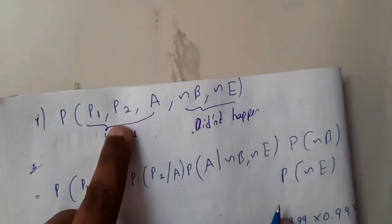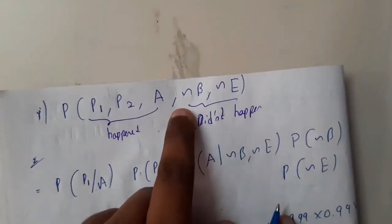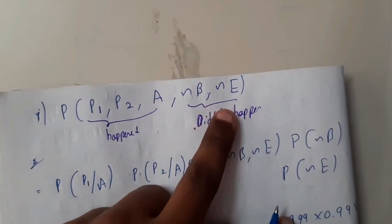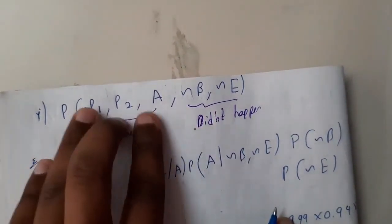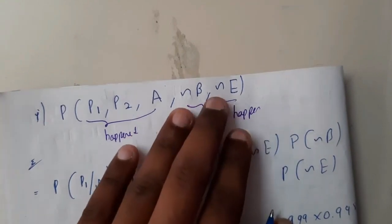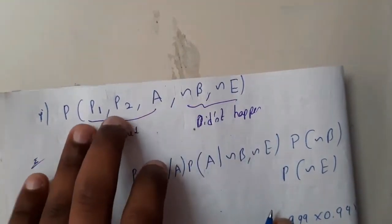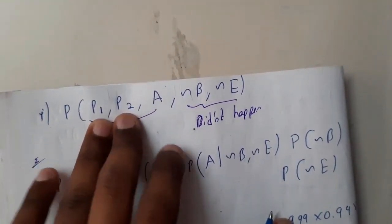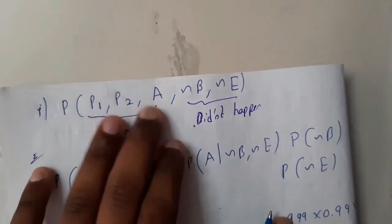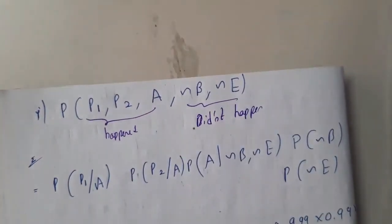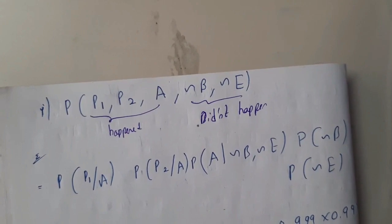Questions will be asked like: probability of P1, P2, A, negation of B, negation of E. This means P1 and P2 called you, the alarm ringed, but there is no burglary and no earthquake, yet somehow the alarm ringed.